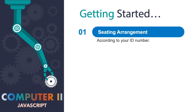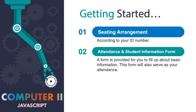To get started this school year 2020 and 2021, here is a list of guidelines for computer class. Number one is the seating arrangement. By the time you enter the computer lab, a list of seat arrangement is projected on the screen according to your ID number. The vacant seats will be reserved for those who are taking online class for the first few weeks. Number two is attendance and student information form. I will distribute this form for you to fill up, which will also serve as your attendance for today. Those who are taking online class may fill up this form once they get back to school.